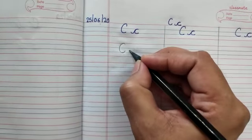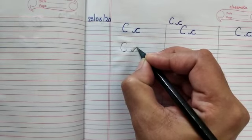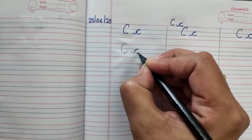Now small c, a curve then up, back with a curve.